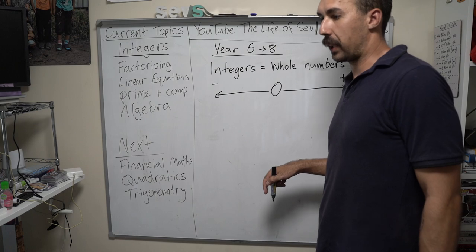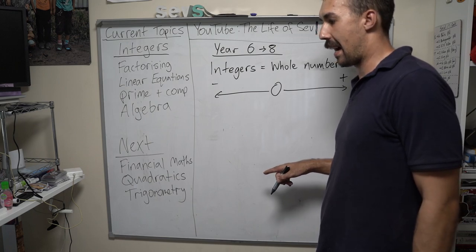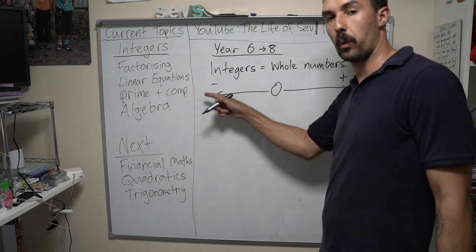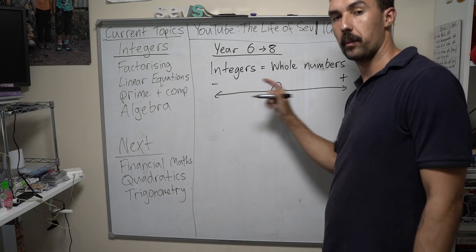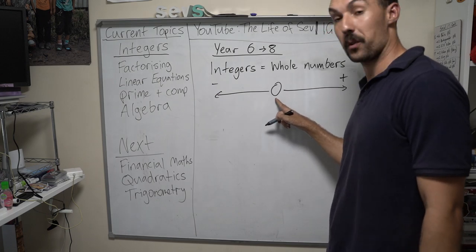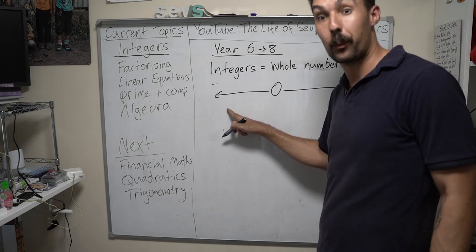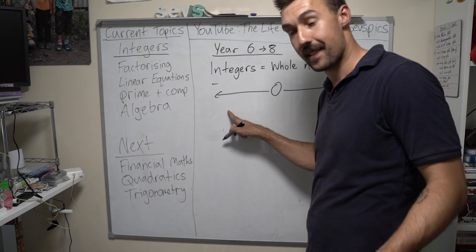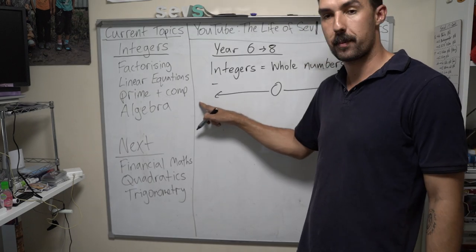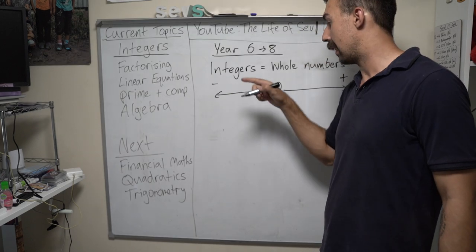And then if we're talking about money, we normally go on a horizontal scale. So if we go into negative money, we owe money, we are in debt, we have less money — negative money. We're going to the left.